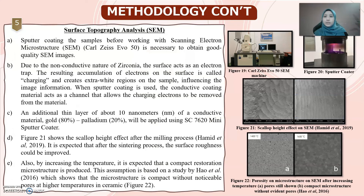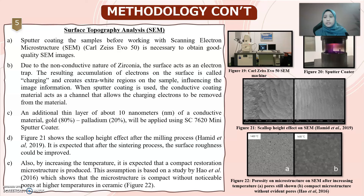The fifth step is surface topography analysis using a scanning electron microscope. Sputter coating of the sample is required before working with the SEM machine to obtain good quality SEM images. Due to the non-conducting nature of zirconia, the surface acts as an electron trap, resulting in accumulation of electrons called charging, which produces white regions on the sample that distort image information. When sputter coating is used, the conductive coating material acts as a channel to remove the charging electrons. An additional thin layer of approximately 10 nm of conductive material — 80% gold and 20% palladium — is applied using the sputter coater.